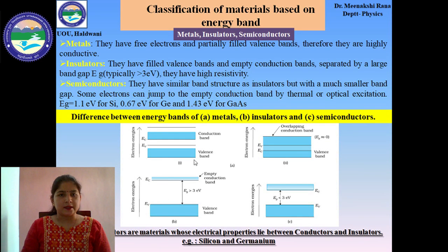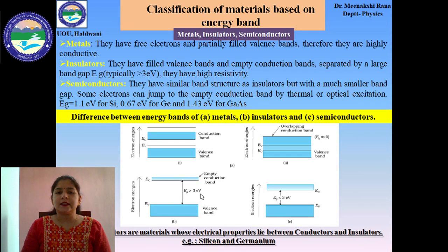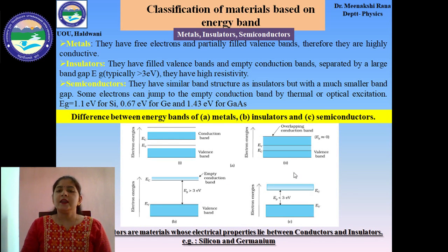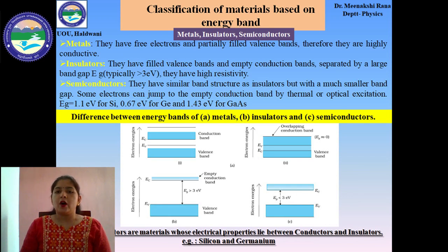In case of insulators, they have a filled valence band and an empty conduction band, which are separated by a very large band gap of the order of greater than 3 electron volts, which is why they have very low conductivity. In case of semiconductors, they have a similar band structure as insulators but with a very small band gap of the order of less than 3 electron volts.